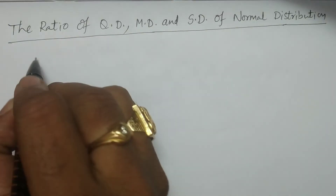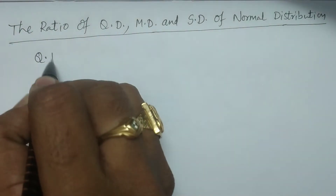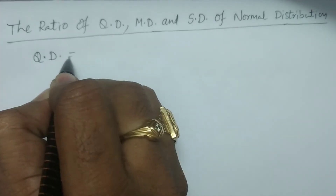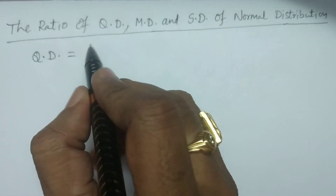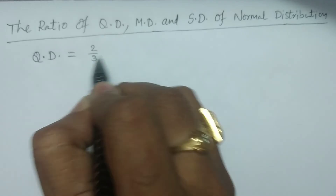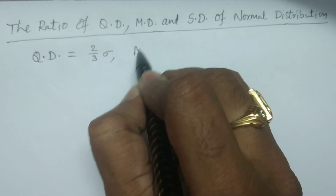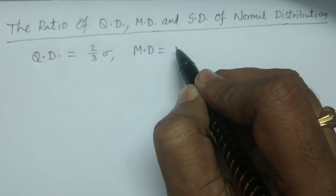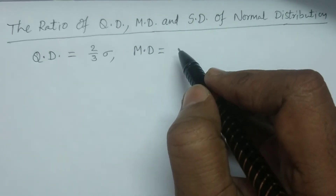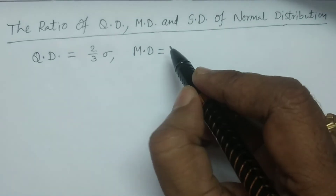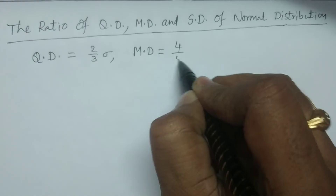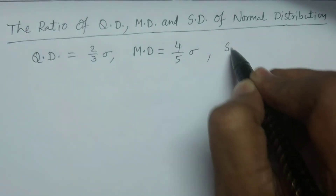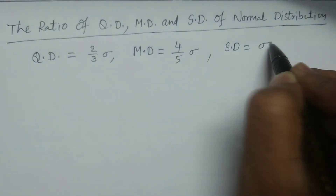Now, because I have already calculated these, please consider: quartile deviation of normal distribution is 2/3 sigma, mean deviation about the mean is 4/5 sigma, and standard deviation of normal distribution is simply sigma.